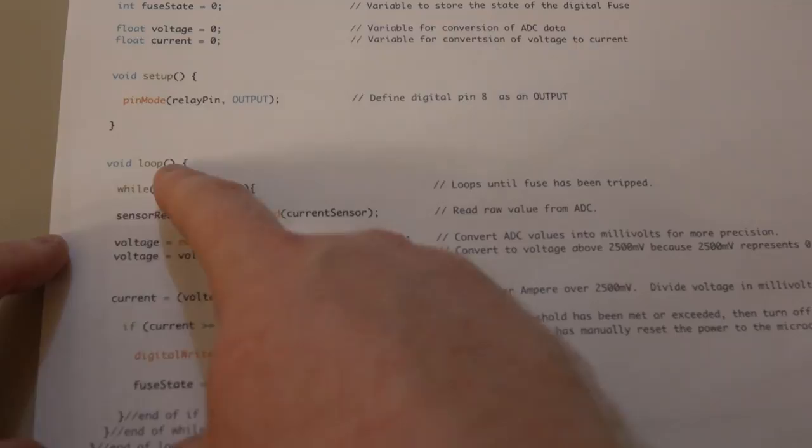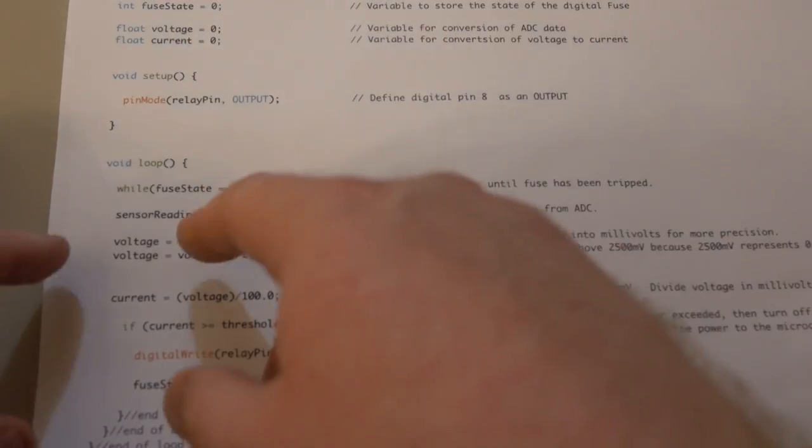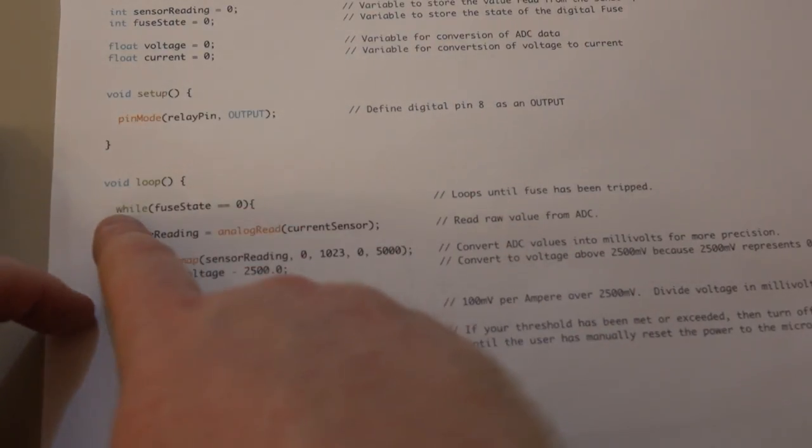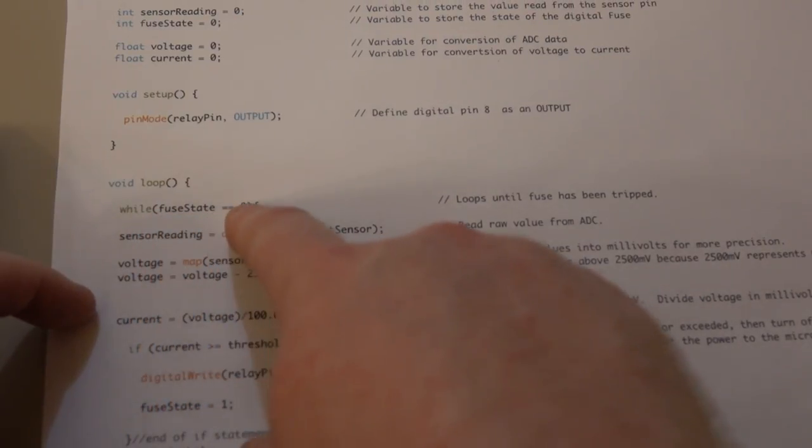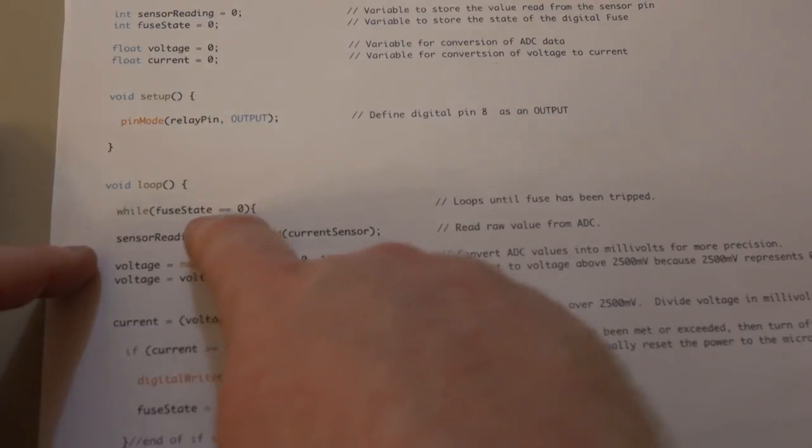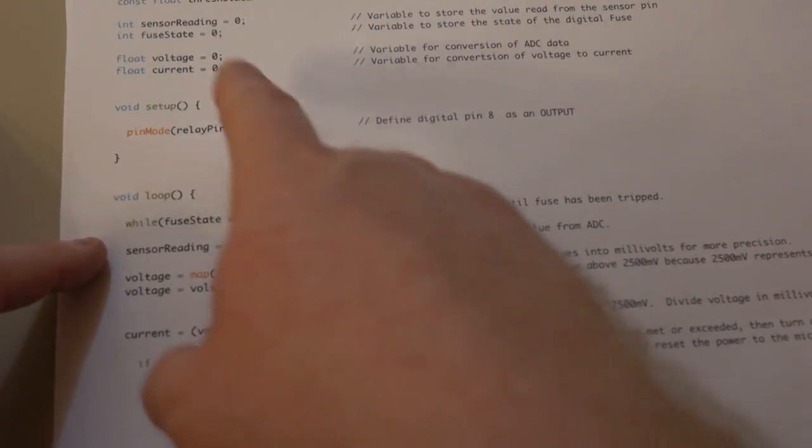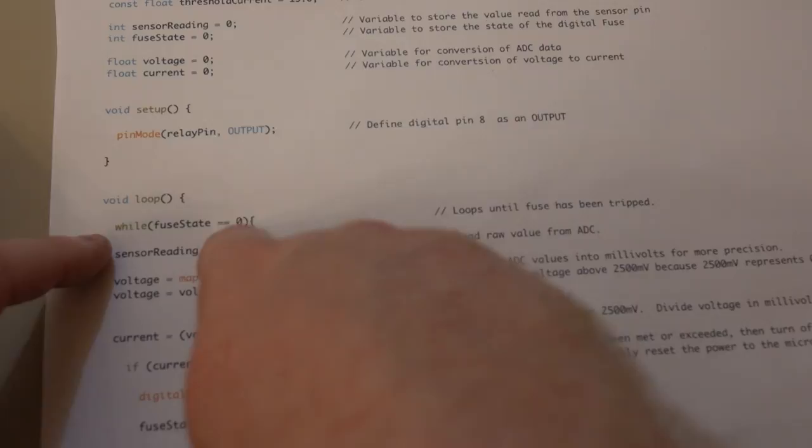Next we have the loop program, and as the name suggests, it just loops over and over until the power is removed. And I have a while statement here - while fuse state is equal to zero. So basically I have this setup to where it will loop this until the fuse is tripped. Once the fuse is tripped, it's not going to be doing anything until you manually remove the power and reset the microcontroller.